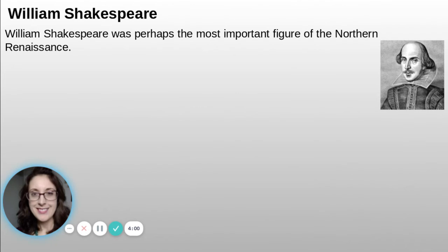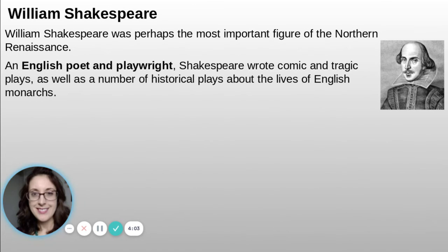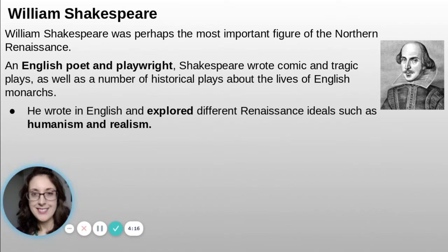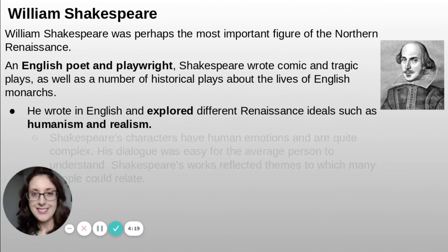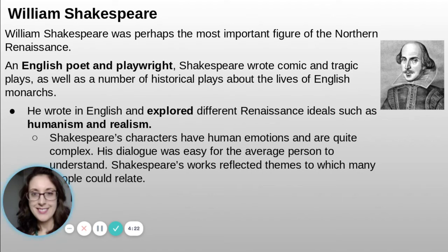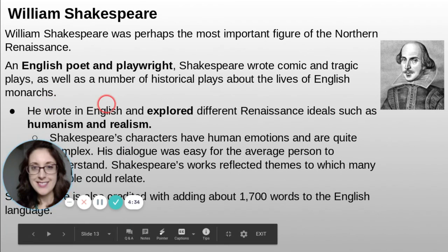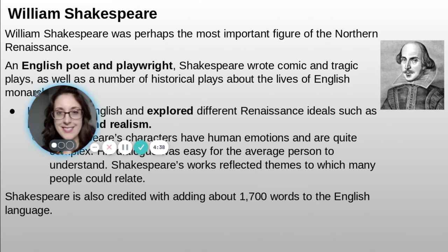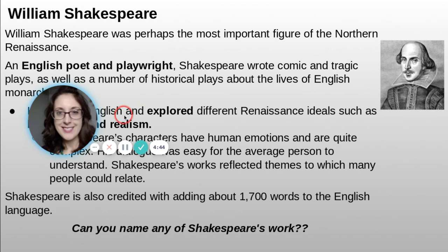William Shakespeare was perhaps the most important figure of the Northern Renaissance. An English poet and playwright, Shakespeare wrote comedies, tragedies, plays, as well as a number of historical plays about the lives of English monarchs. He wrote in English and explored Renaissance ideals such as humanism and realism. Shakespeare's characters have human emotions and are quite complex. His dialogue was easy for the average person to understand, and his words reflected themes to which many people could relate. He is also credited with adding about 1,700 words to the English language. Can you name any of Shakespeare's works?